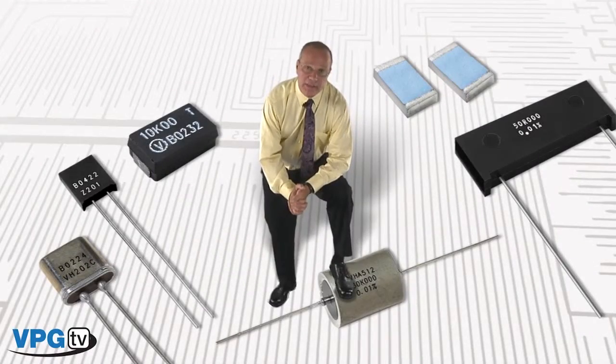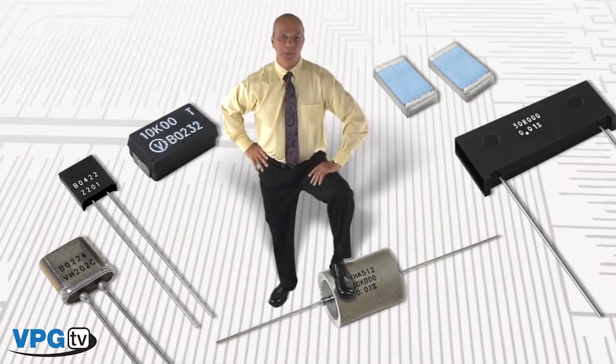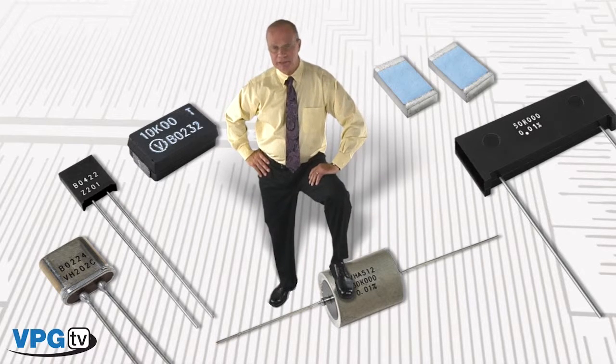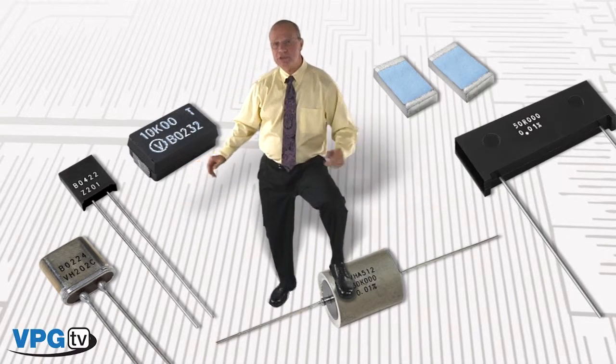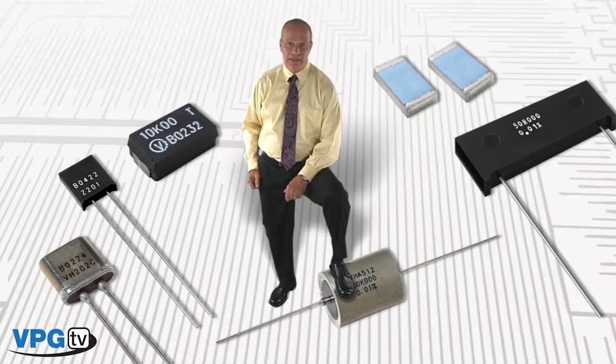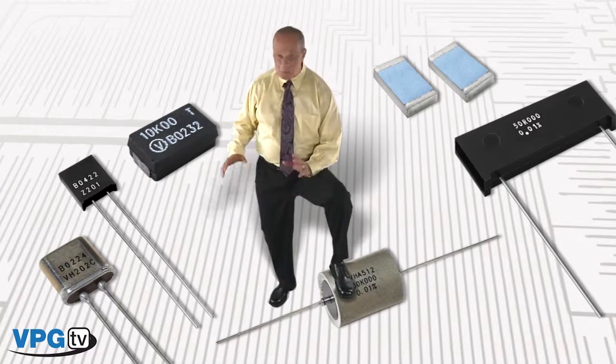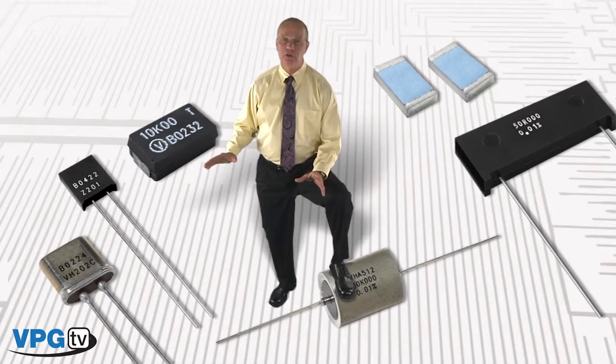As we have just seen, because of the inherent robustness of the bulk metal foil element, Vishay foil resistors are capable of surviving in a high moisture environment much longer than nichrome thin film resistors.